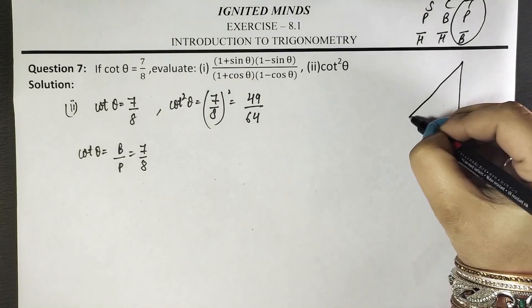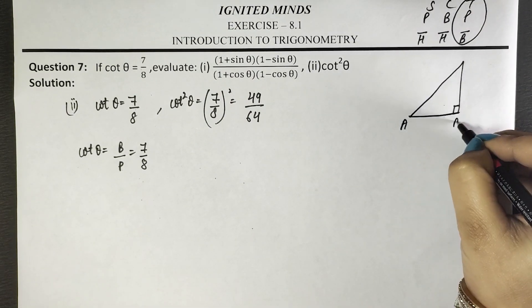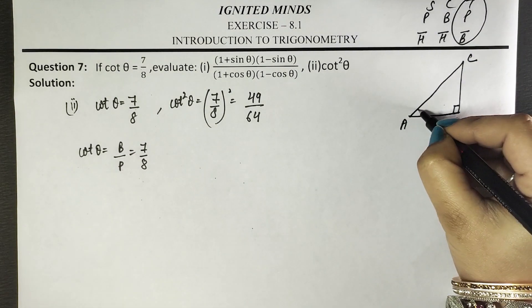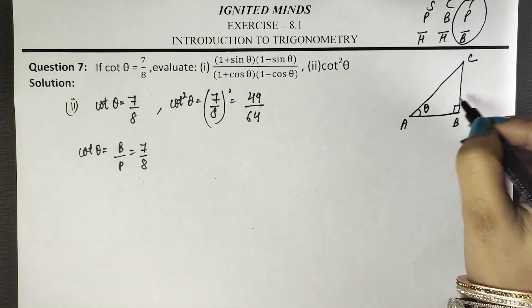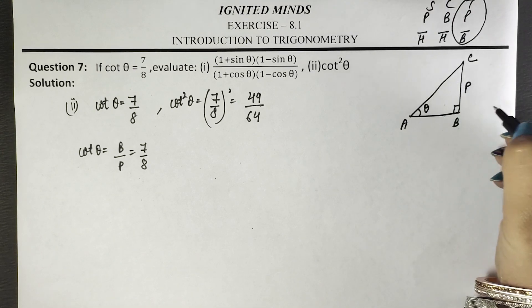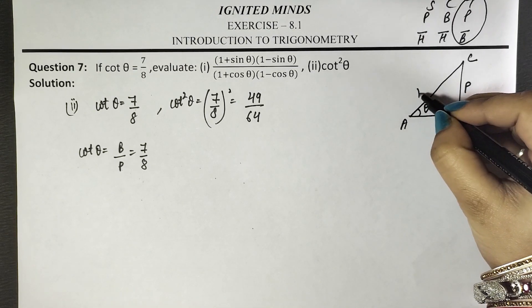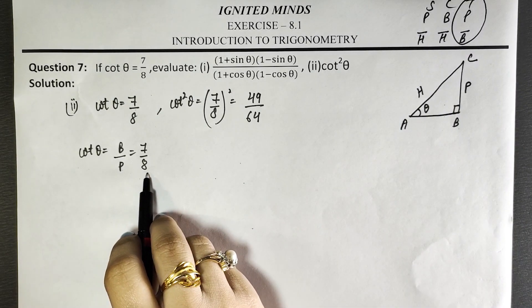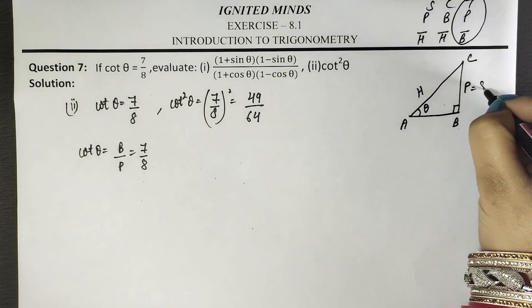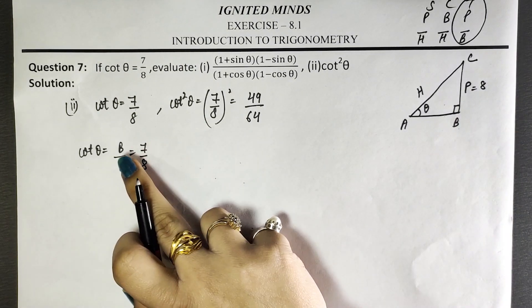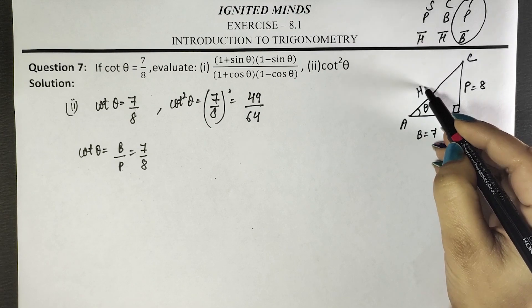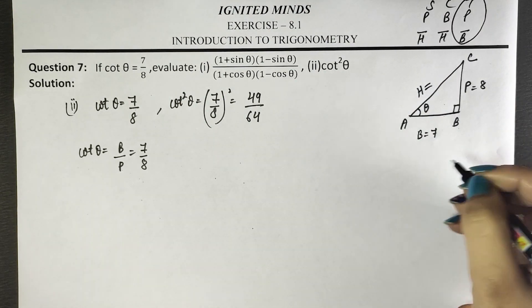Let it be triangle ABC with angle θ. I will make this: θ at angle A, perpendicular at C making 90 degrees, hypotenuse, and this is your base. So you know your base is 7, and perpendicular is 8.